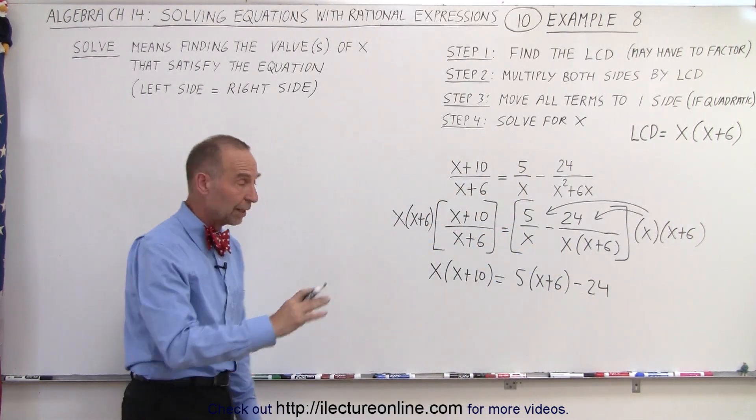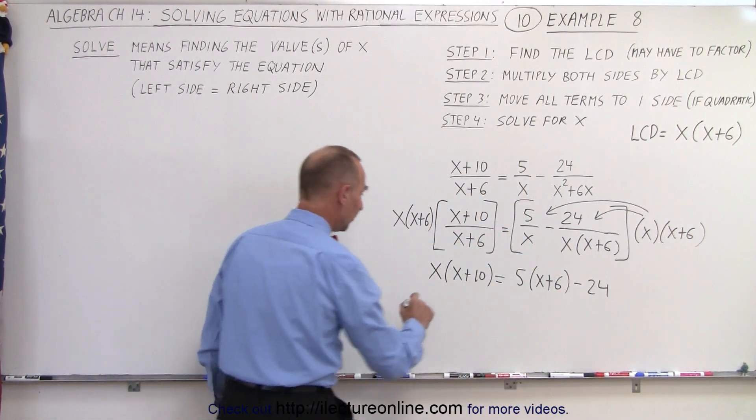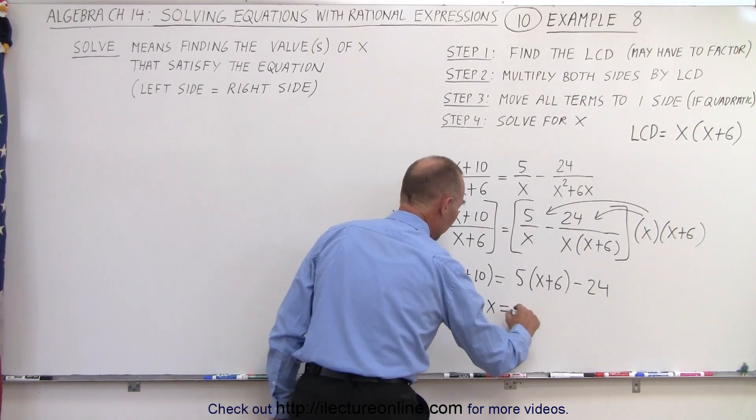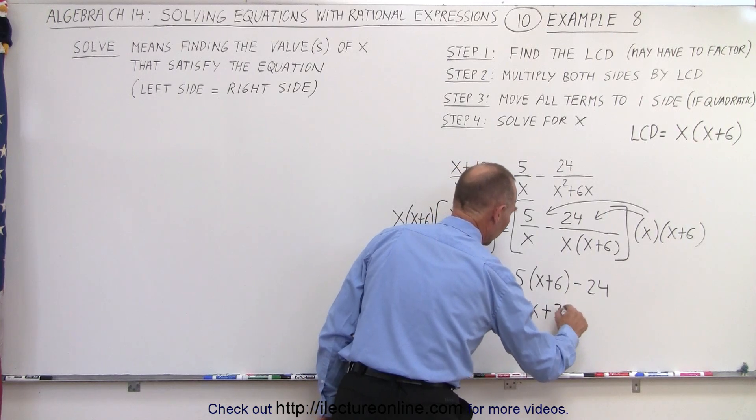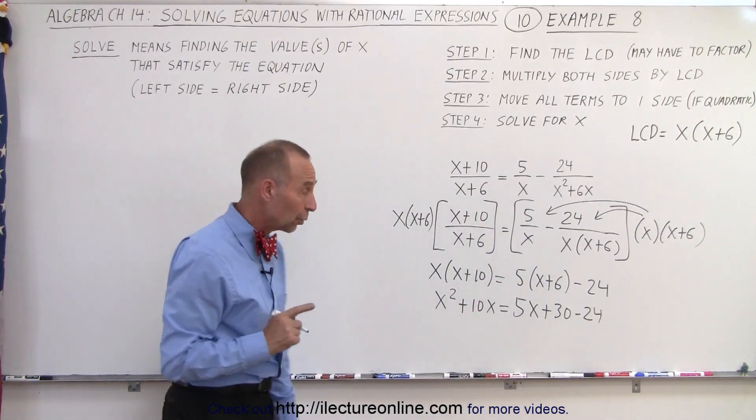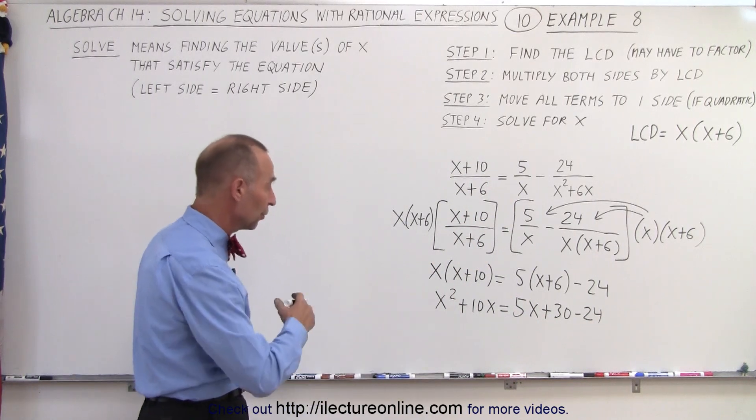Let's go ahead and multiply everything through and see what we get. We get x² + 10x = 5x + 30 - 24. And noticing that we have a quadratic equation now, we should move everything over to one side.